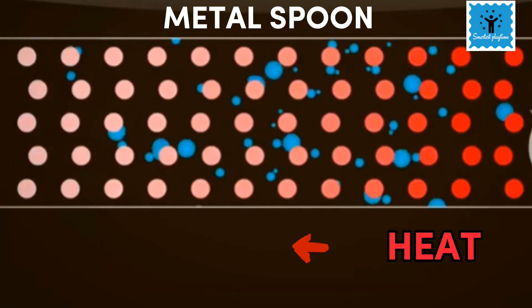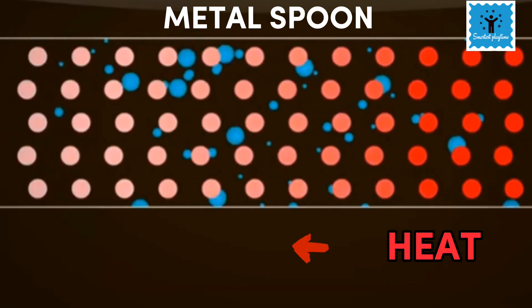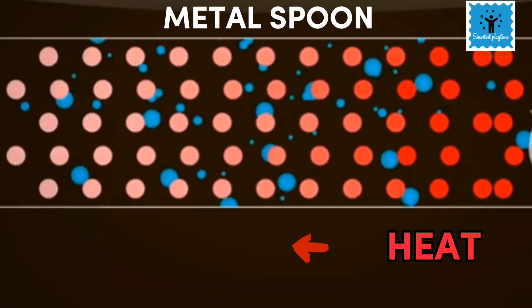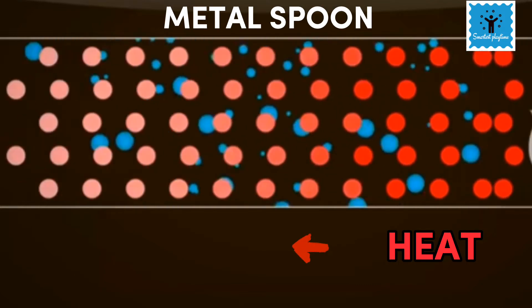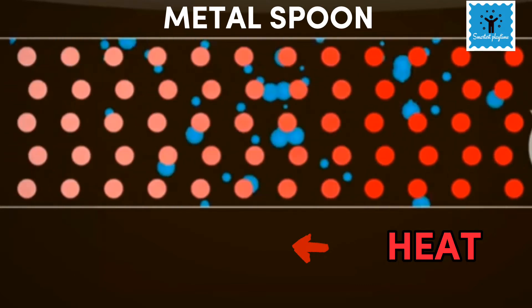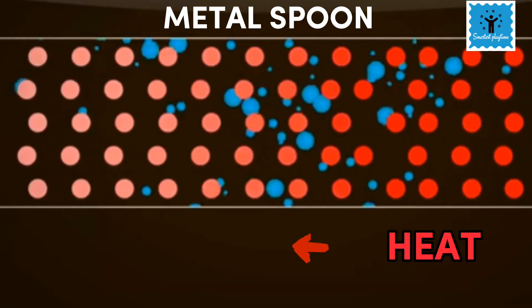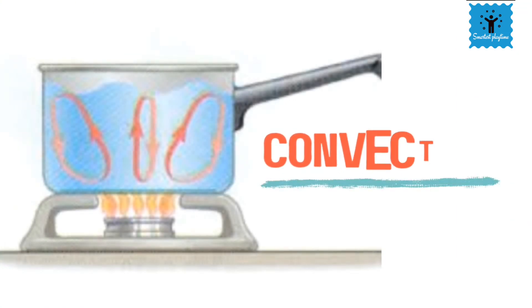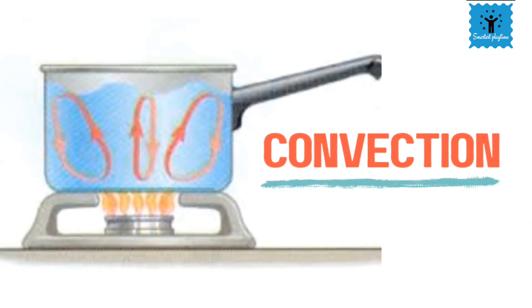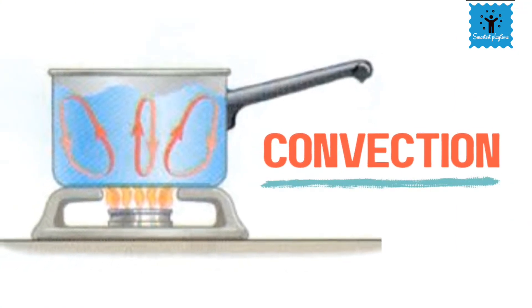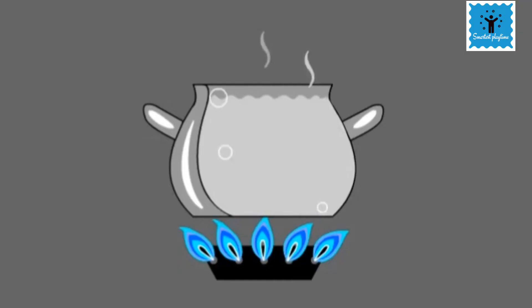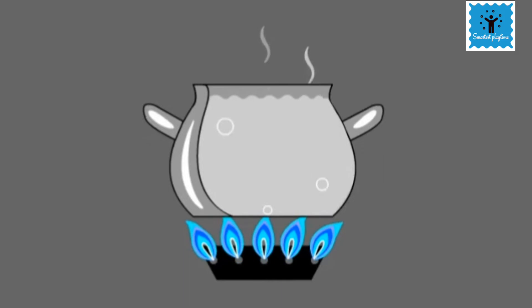In this way the heat is transferred to the other end of the spoon. Now keep a pot of water on a burner — only the bottom of the pot touches the flames of the stove, but you will notice that all the water inside the pot, even the water not touching the flame, becomes warmer.